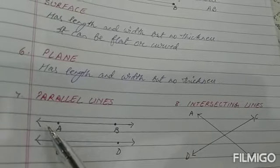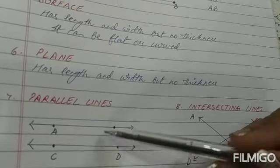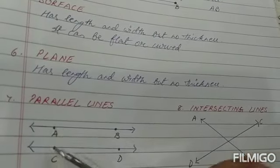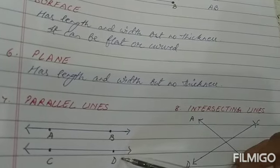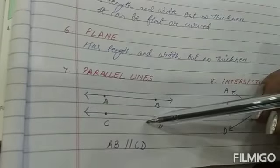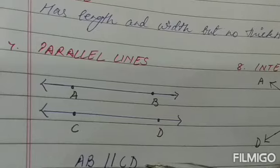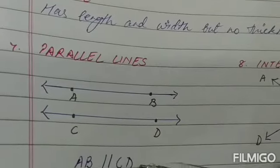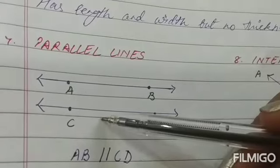Next are parallel lines. If we draw two lines and the distance between them is the same everywhere throughout, those two lines are a pair of parallel lines. As drawn here, AB is one line and CD is another, and because they are parallel we write AB ∥ CD. Parallel lines will never meet each other no matter how much we extend them in both directions.